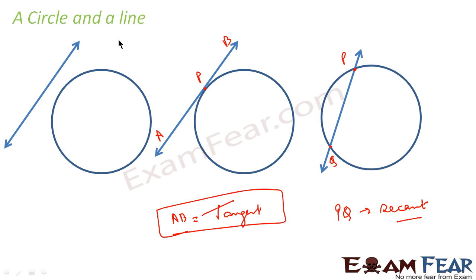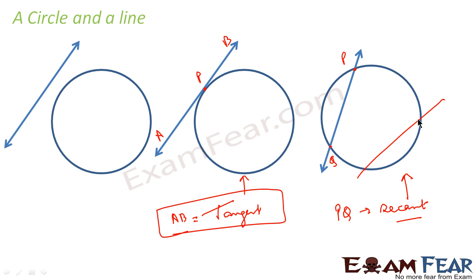So there are three possibilities: in one case the line is not touching the circle; in the second case the line is touching the circle at one point — this is called tangent; and in the third case the line is touching the circle at two distinct points — this is called secant. Tangent is nothing but a line that touches the circle at one point. Secant is nothing but a line that touches the circle at two distinct points. For example, if you draw a line touching at points C and D, then line CD is also a secant.